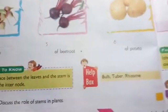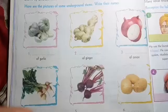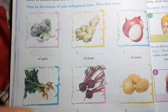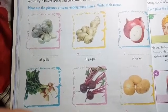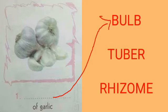Here are three words given in the help box: bulb, tuber, and rhizome. We have to select the name by which these six underground stems are known. First one, this is garlic — lehsun, jo sabzi mein prayog karte hain. Toh garlic jo stem hai, iska naam hoga: bulb of garlic.